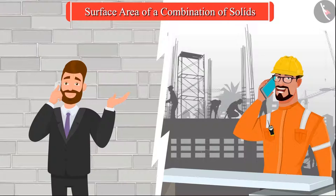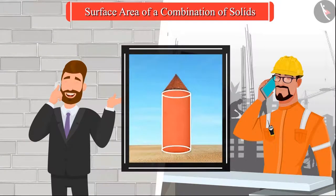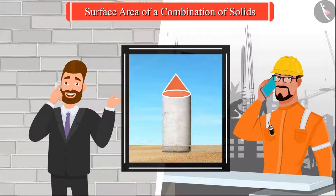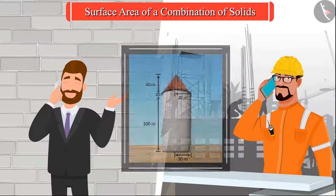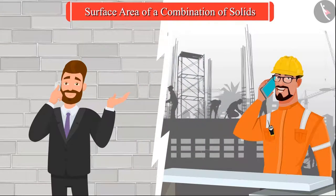The engineer replies: 'Sure, but before that can you tell me about the shape and the measurement of the warehouse?' The company's warehouse is in the form of a combination of a cylinder and a cone whose heights are 100 meters and 40 meters respectively and the radius of the base of both is 30 meters. The engineer says he will respond in some time.